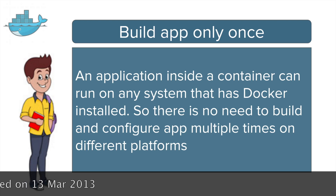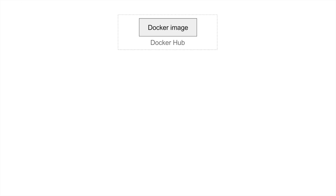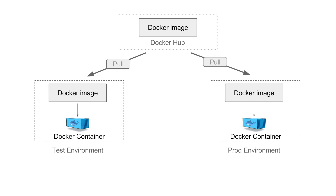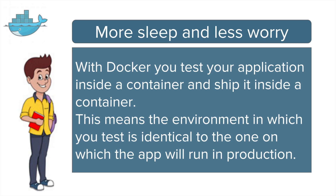Also, you can create a Docker image which you can put on Docker Hub or any other repository, and then we can pull this image on any environment and run the image to create a Docker container. Our application will run inside this container. We can do the same with any other environment, so we can be sure that whatever testing we have done in our test environment, our application will work as-is in the production environment, because now these two environments can be considered identical as they are running the same Docker container.